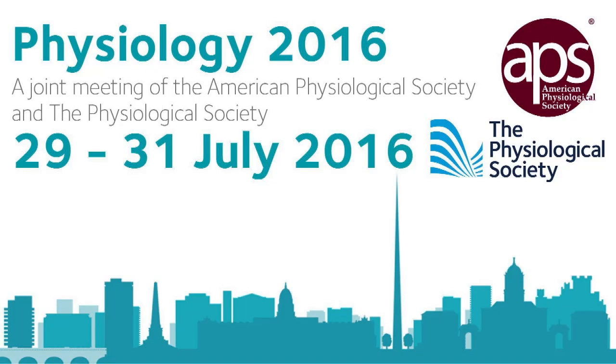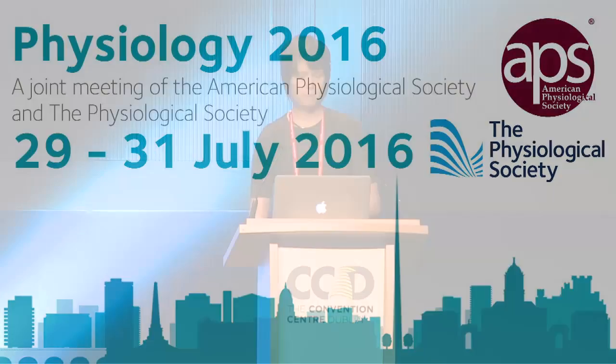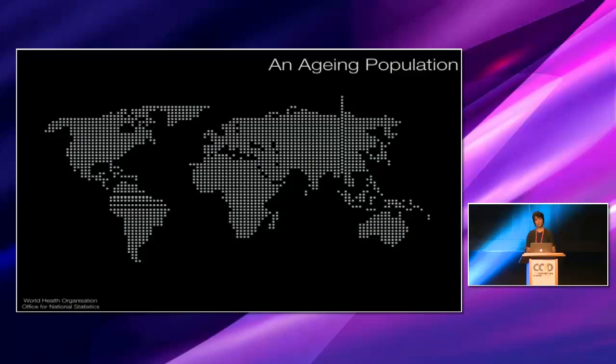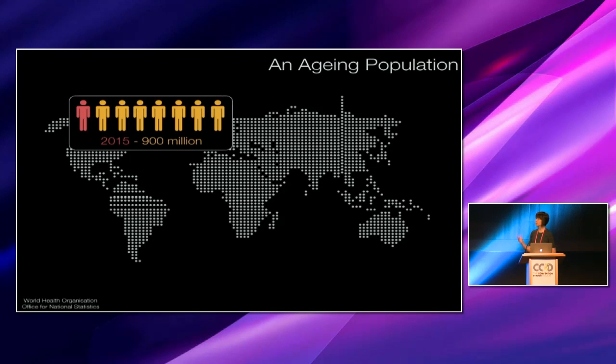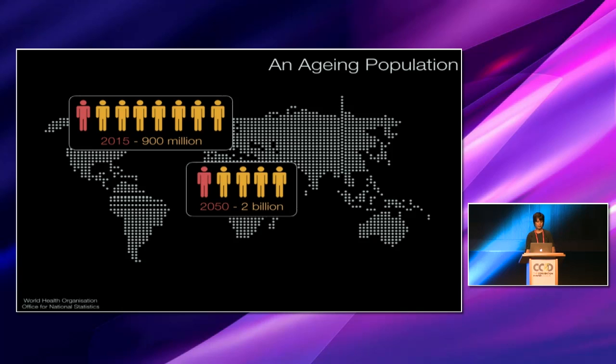It's a pleasure to be here today. So I'll just start off with some background. As you'll all be aware, we have a rapidly aging population. So in 2015, there were approximately 900 million adults aged 60 years and older worldwide. By 2050, this figure is set to more than double to over 2 billion.